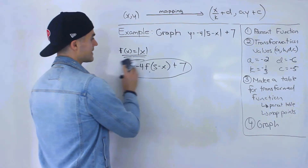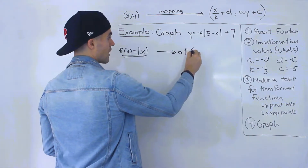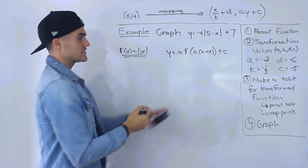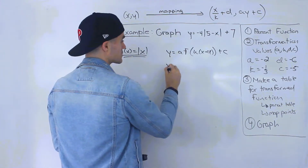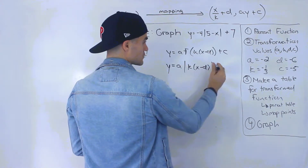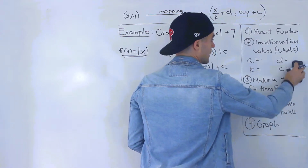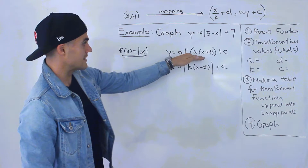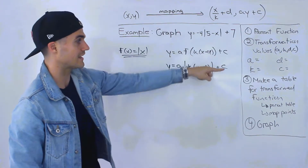Now, if we take the general transformation format — y equals a times f of k bracket x minus d, plus c — and specifically apply it to the parent function absolute value of x, it looks like: y equals a times absolute value of k bracket x minus d, all within the absolute value, plus c. What we've got to do is look at our function, relate it to this format, and then get those transformation values. The a value is obviously negative 4, and the c value is obviously positive 7.